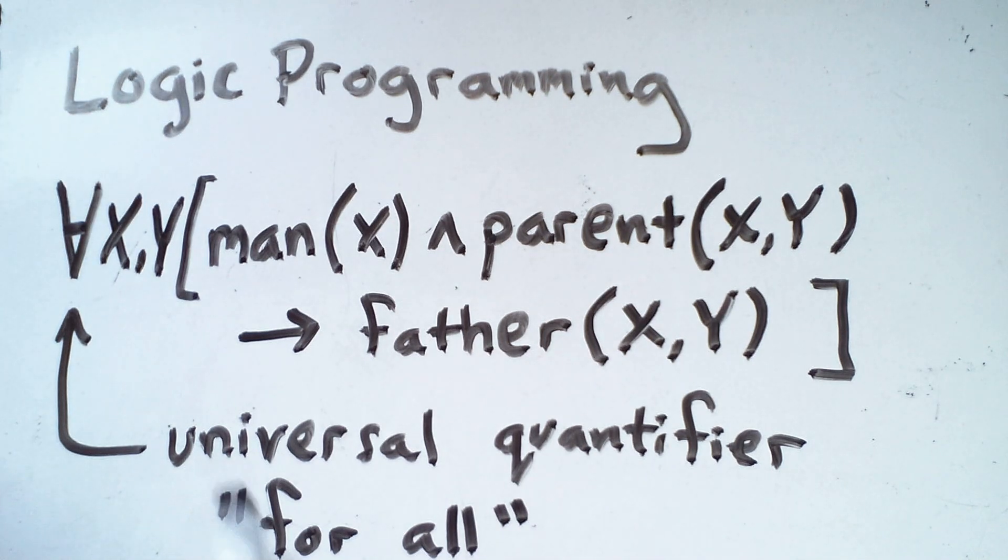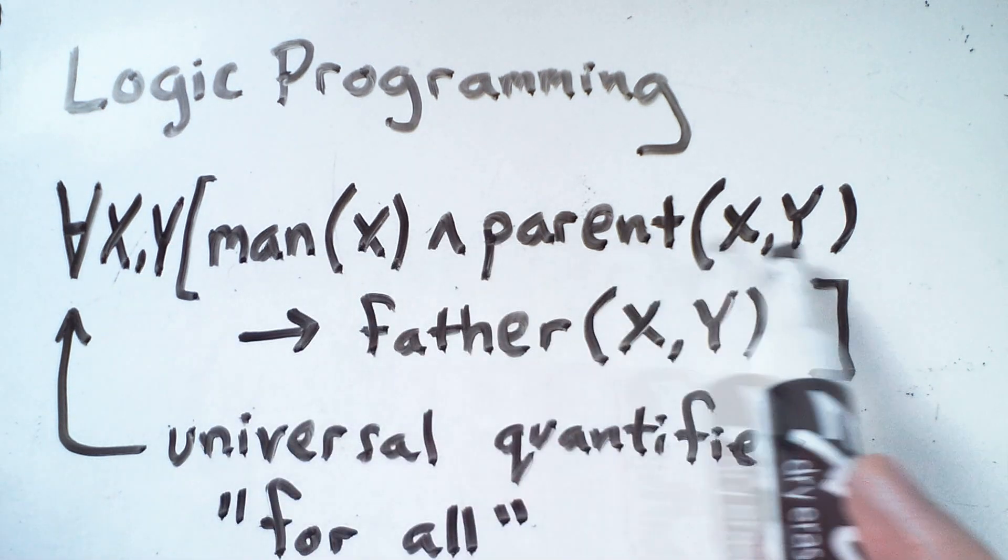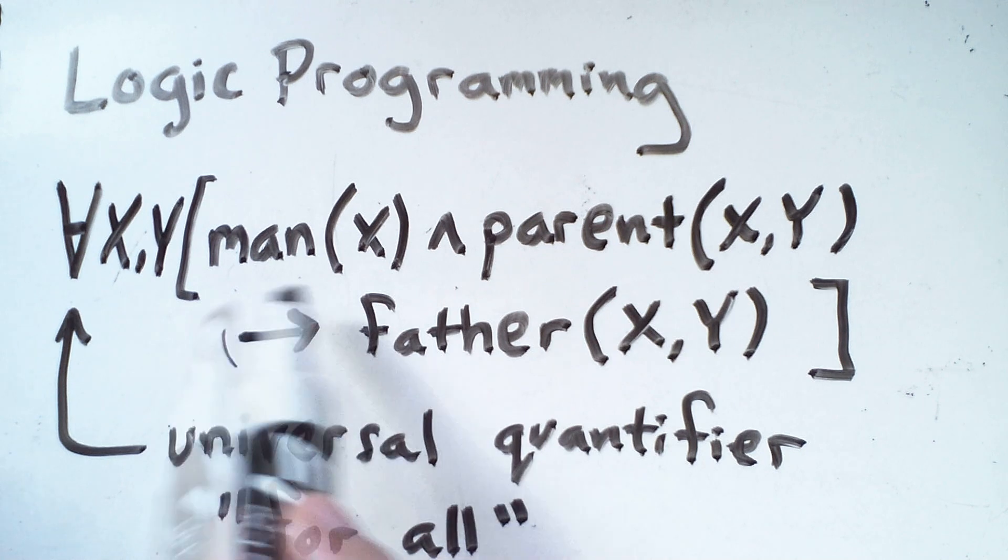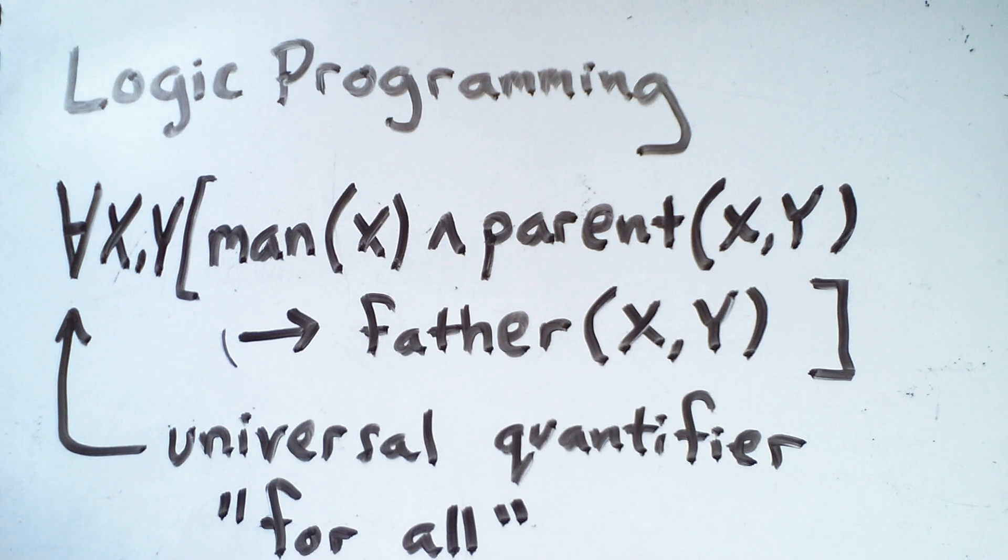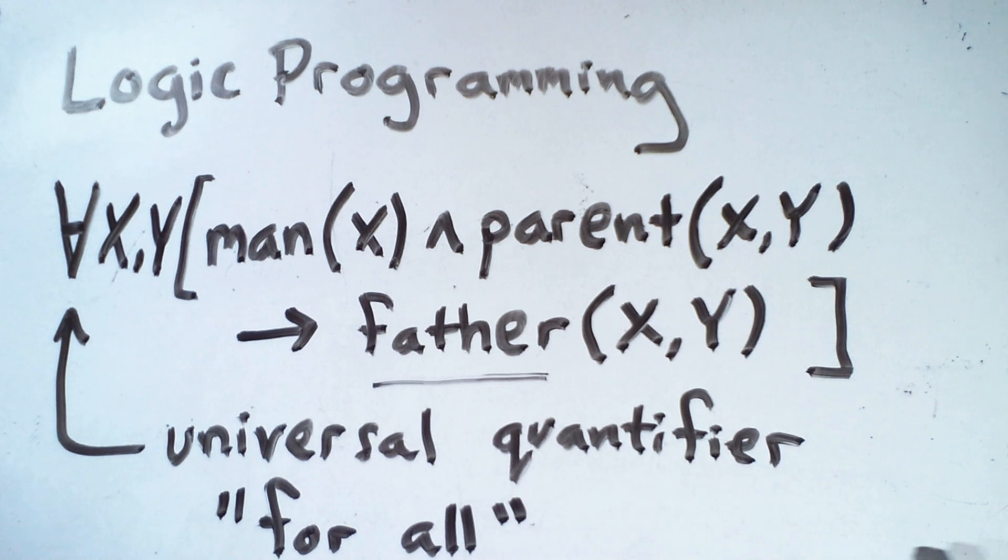So notice that the x and the y are quantified over the entire expression. Now, strictly speaking, the x and the y have to come from some domain of possible values. But in this statement, any values that satisfy the left hand side of that arrow will also satisfy the right hand side. So because we're deriving this new fact about this predicate on the right hand side, what we've basically done is define what it means to be a father. You are a father if you are a man and a parent.